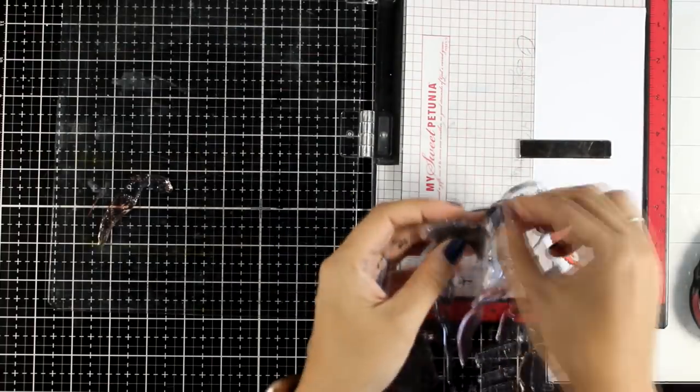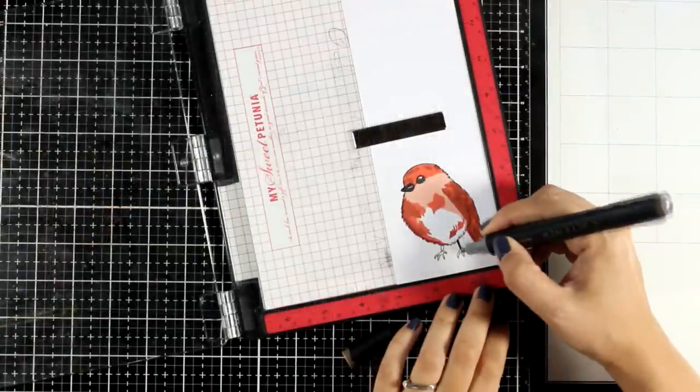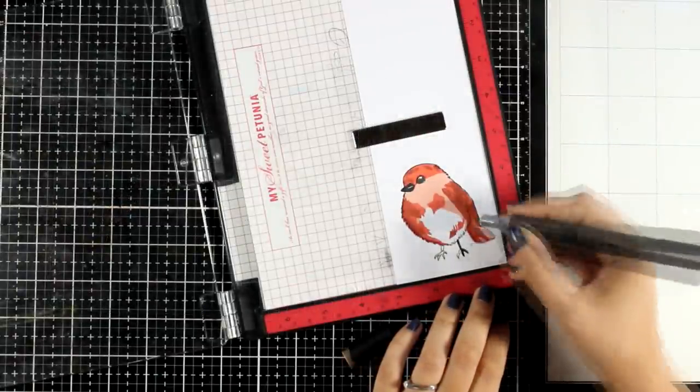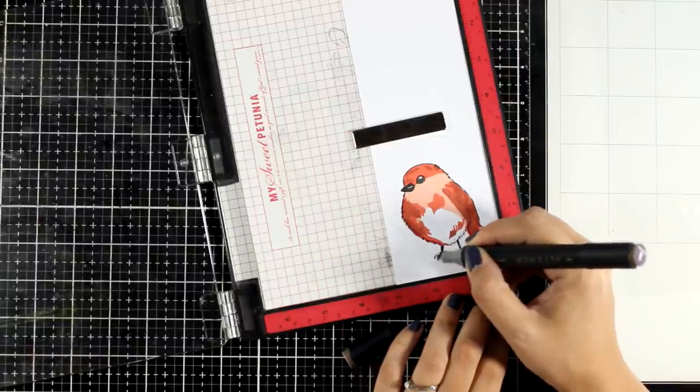There is also a little beak that I'm going to stamp with black. And then I'm just going to grab a marker. And with the fine tip I'm going to color in the feet with brown. I believe this is espresso.